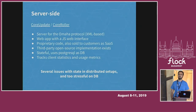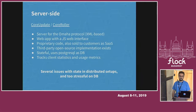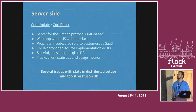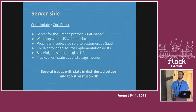CoreUpdate is stateful at every single level — it's not even distributed state, it's linked to a specific database instance, which is Postgres. By the way the Omaha protocol works, we can also track client statistics and usage metrics so we can serve different updates to different clients. This is both good and bad. The problem is this kind of architecture has several issues when you start distributing the setup, especially around the database. Tracking client statistics is very stressful on the database, and this is a key component of the auto-update infrastructure, so the more stress we can reduce from this path, the better.